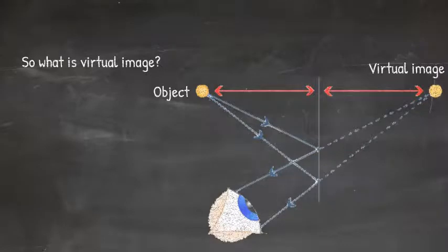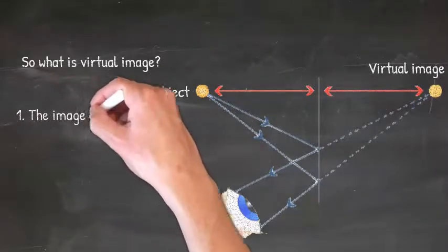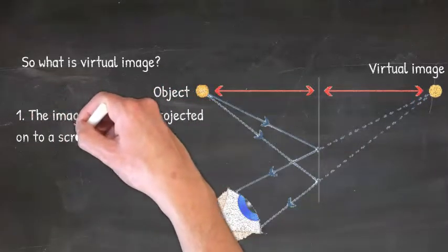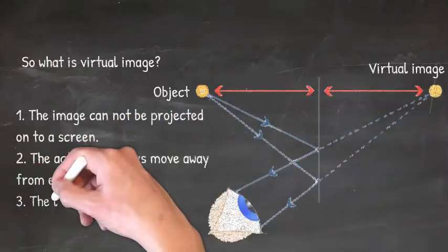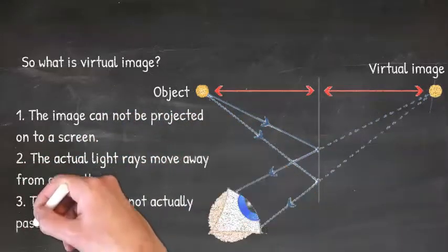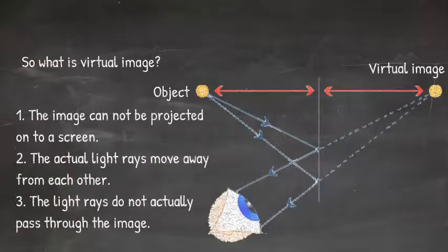There are three ways to identify virtual images. The image cannot be projected onto a screen, the actual light rays move away from each other, and the light rays do not actually pass through the image.